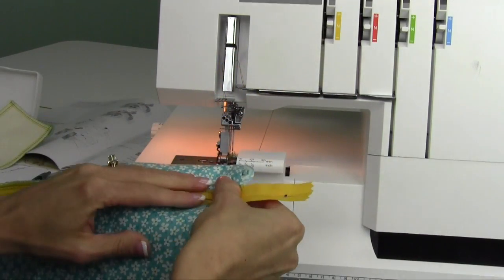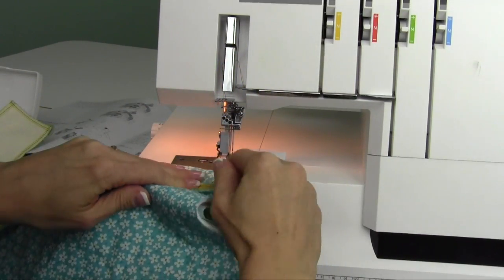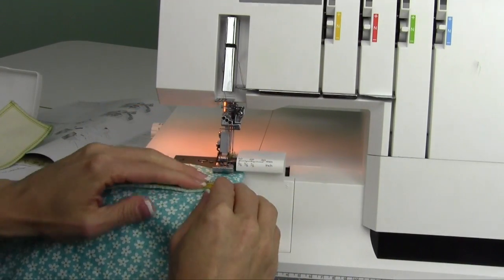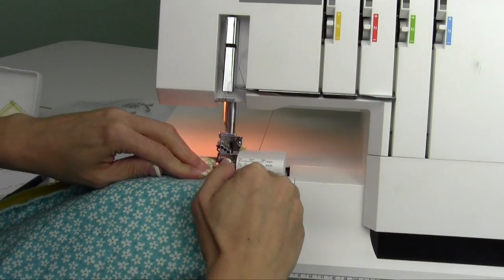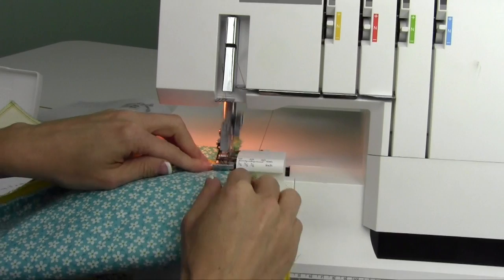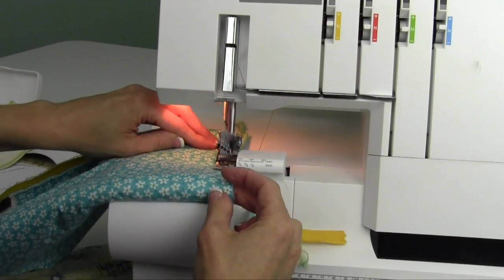Yes, we are going to let the serger cut that off with the knife. Give it a little help. Get it started. If you haven't already lengthened your stitch length because now we're going over some thick, thick areas. You don't need the serger putting down lots of close stitches. Just get that all in there and then stitch it down.